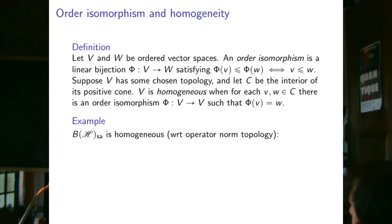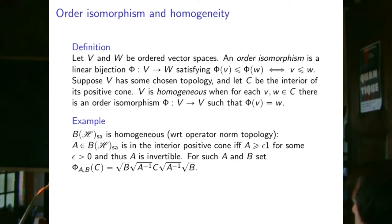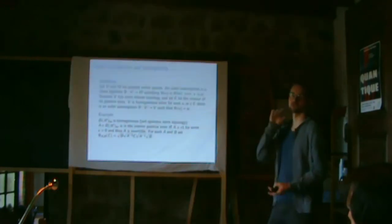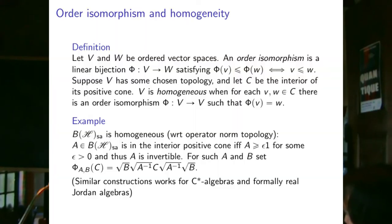Example: self-adjoint operators on a Hilbert space are homogeneous with respect to the operator norm topology. An operator a lies in the interior of the positive cone if and only if a ≥ ε·I for some ε, meaning a is invertible. For two such invertible positive operators a and b, the order isomorphism mapping a to b is the map X ↦ √b · (a⁻¹/²·X·a⁻¹/²) · √b. C*-algebras are also homogeneous.